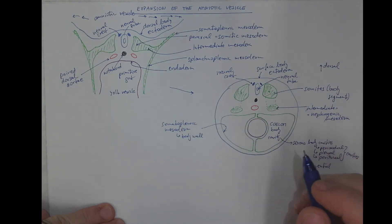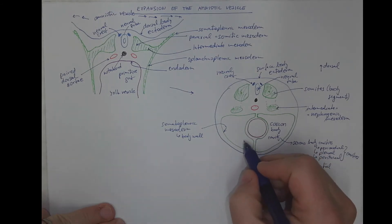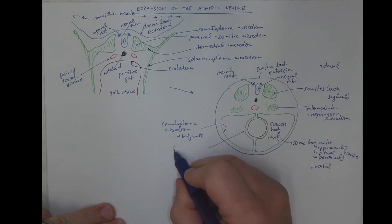This mesoderm will contribute to the formation of the body wall, its muscles mainly. And the inner layer of the mesoderm is the splanchnopleuric mesoderm.